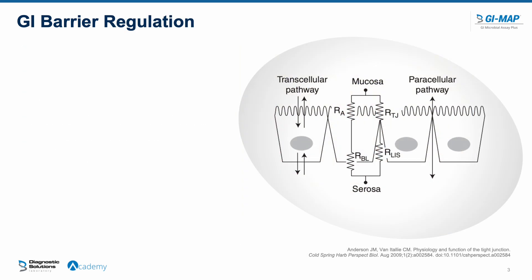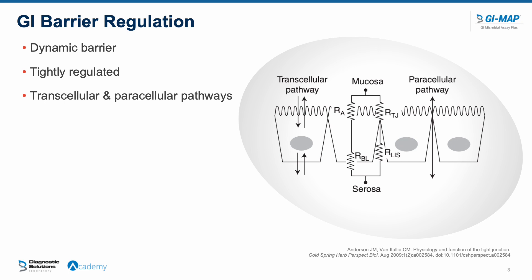The regulation of the GI barrier is dynamic and very tightly regulated. There are two pathways: the transcellular pathway, meaning things going through the cell, and the paracellular pathway, meaning things going between the cells. We'll be talking a lot about the paracellular pathway, which is where zonulin is involved.